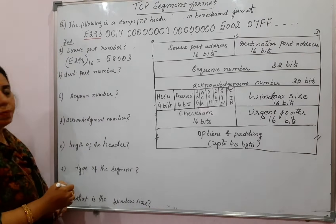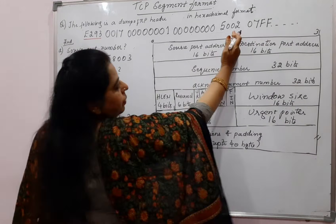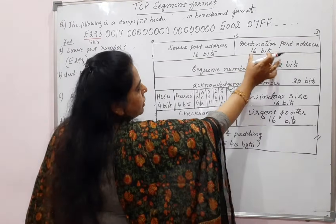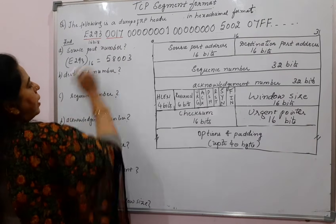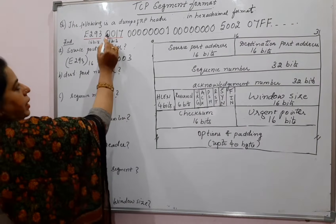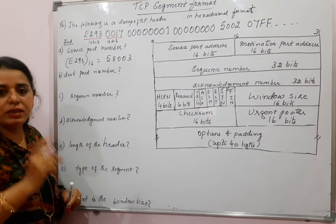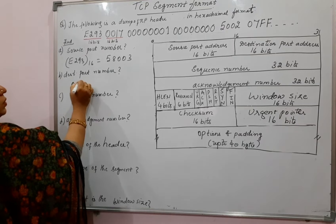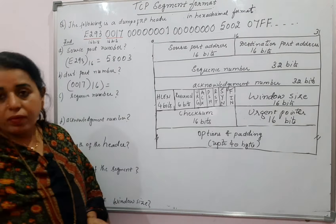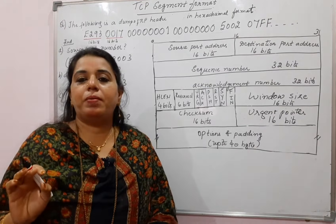Next, you need to find out the destination port number. Once you cross the first 16 bits, the next 16 bits in the path is the destination port address. One number indicates 4 bits: 4, 8, 12, 16 — so 0017 is indicating the destination port address. Convert 0017 from hexadecimal into decimal and you will get the value as 23. The destination port number is 23.